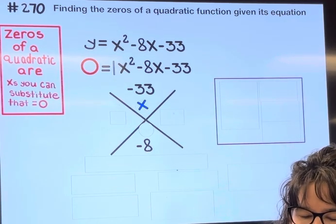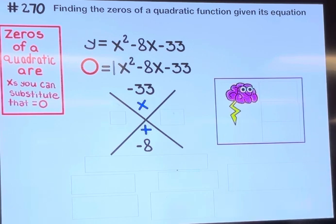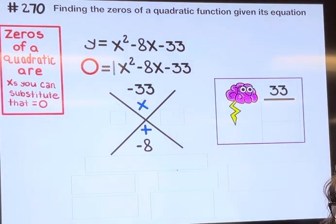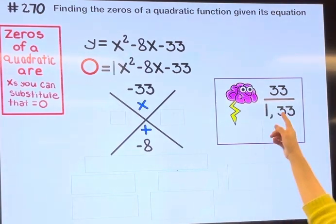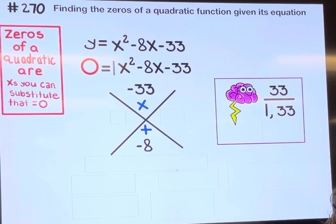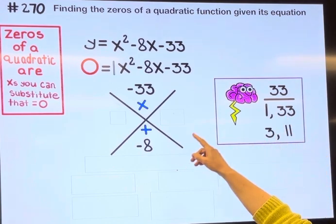We could do a little brainstorming off to the side. We use the positive version of this number, so 33. 1 times 33 is 33. I tried dividing 33 by 2 and I get a decimal. Divide 33 by 3 and I get 11. Divide 33 by 4, 5, 6, 7, 8, 9, 10, I get a decimal. So those are all my factor pairs.